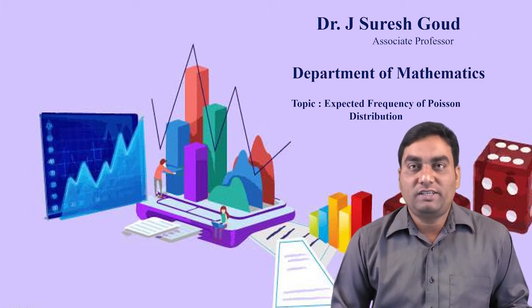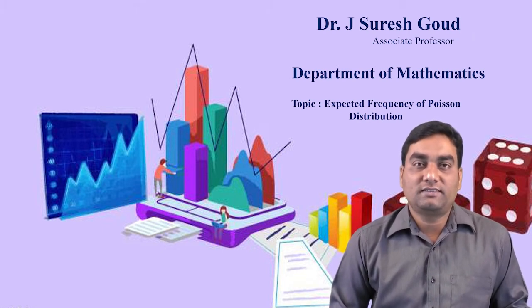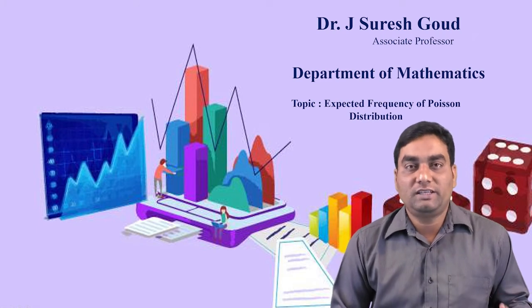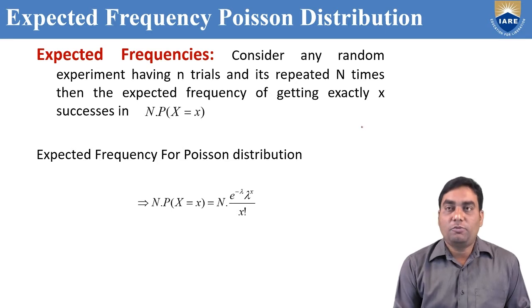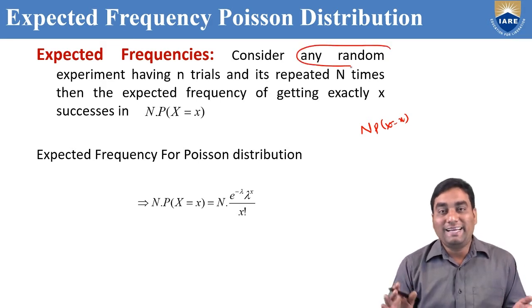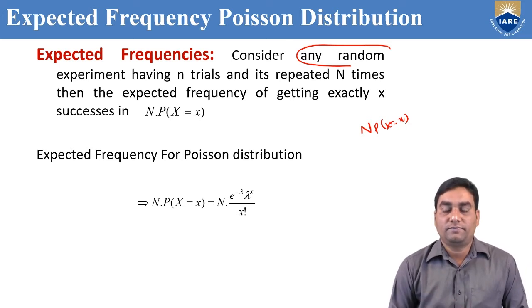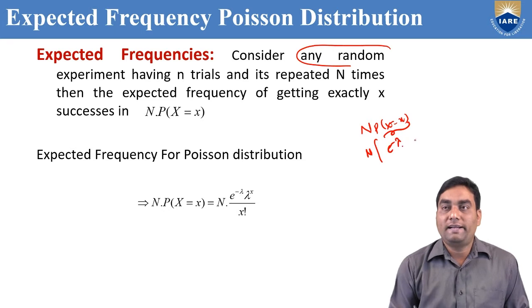In the previous session, we discussed expected frequency of binomial distribution. Now we are going to discuss the same concept — expected frequency — but using Poisson Distribution. We know that the expected frequency formula is capital N into P(x = x). In Poisson Distribution, the probability formula is P(x = x) = e^(−λ) · λ^x / x!.